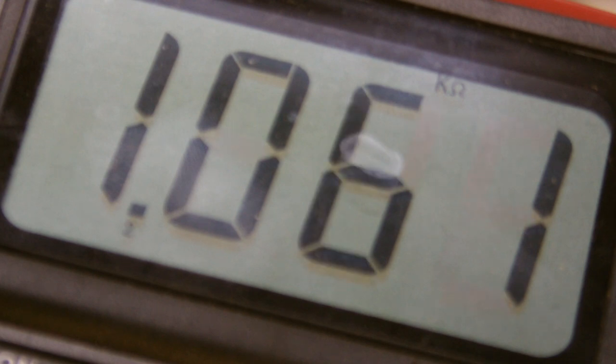So here we have the Dreamcast set on the 2K setting of the multimeter. And if we go back to our laser assembly, I'm going to be touching the bottom point on the side that has two points, because the laser assembly is flipped, and the point on the other side of the potentiometer. And you'll see that it reads about 1,000 ohms. So that's generally what the stock setting for the Dreamcast is.